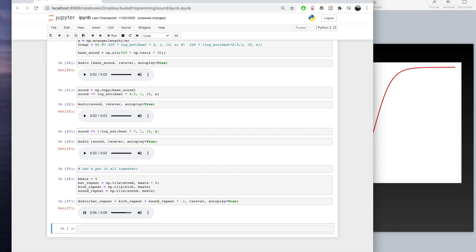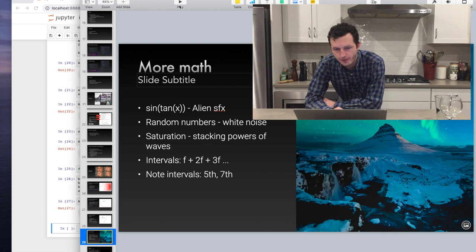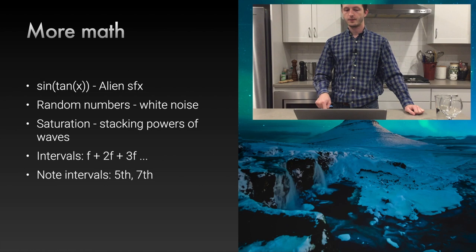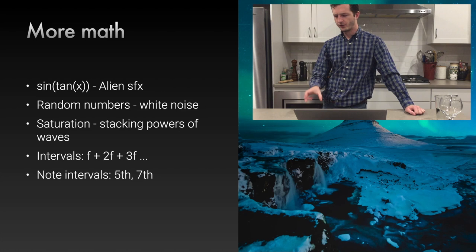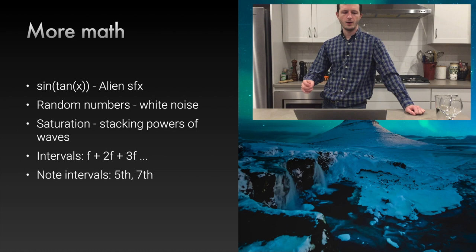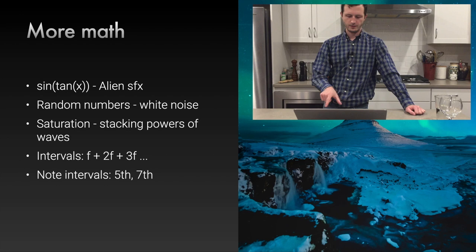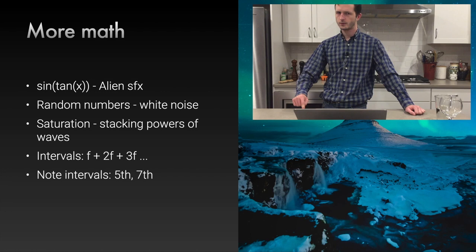Let's put all the sounds together and see what they sound like. Some more math we won't do demos for: the sine of the tangent of x is how we got that alien sound effect. Random numbers from -1 to 1 on a standard distribution — np.random.sample — gives white noise. Saturation adds presence to a sound; it works on sine or saw waves by stacking powers: sin(x) + sin²(x) + sin³(x) + sin⁴(x) and so on, which fills out a sound almost in a reverb-like way.